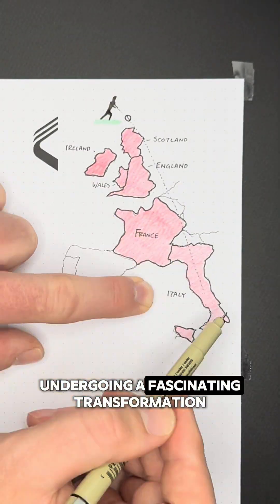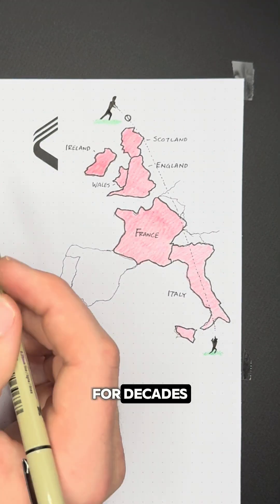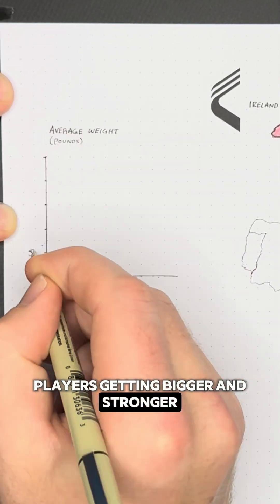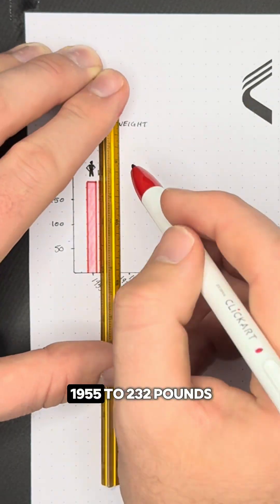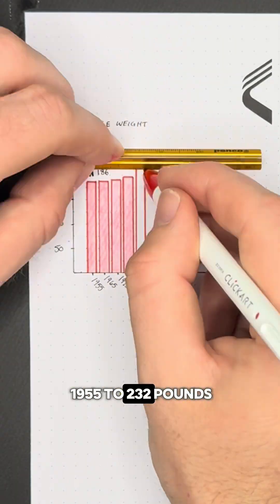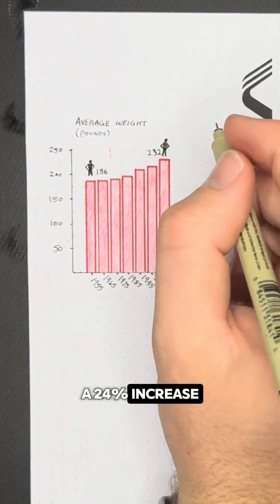But rugby as a sport is undergoing a fascinating transformation. For decades, the game focused on players getting bigger and stronger. This chart shows how the average weight of Six Nations players rose from 186 pounds in 1955 to 232 pounds by 2015, a 24% increase.